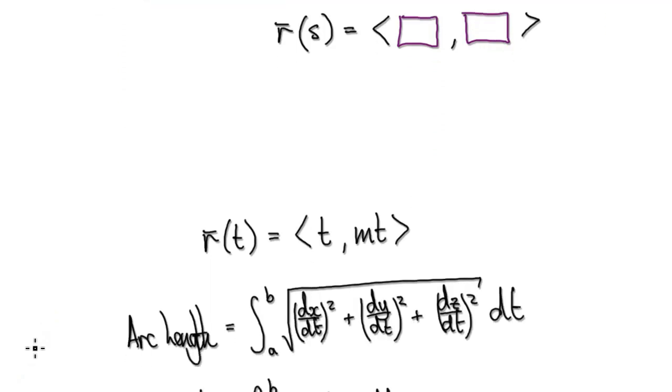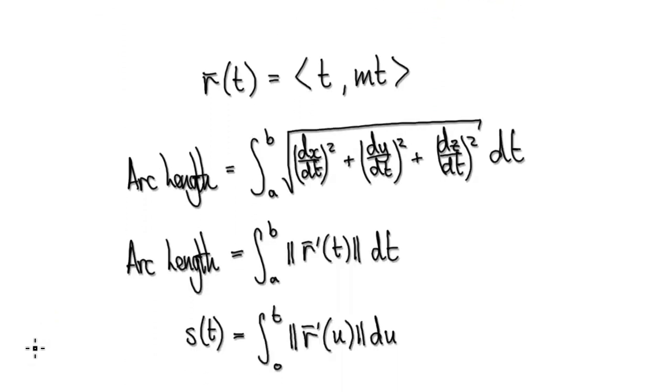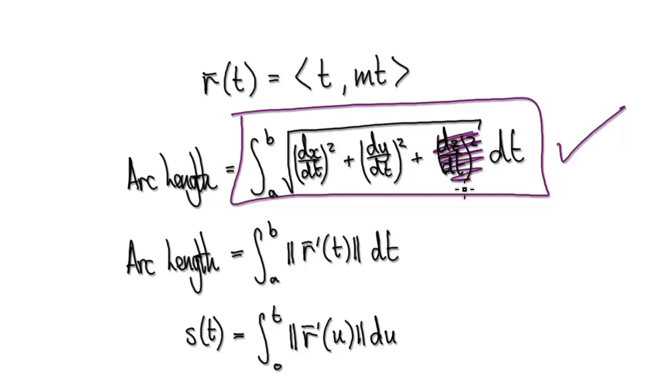Okay, so to do this, we've already seen to set up the parametric equations for a straight line, it will be t and then mt. And then the formula for the arc length is given by this. I'm expecting you to know this by now. But because we're working 2D, we can forget about the z direction.